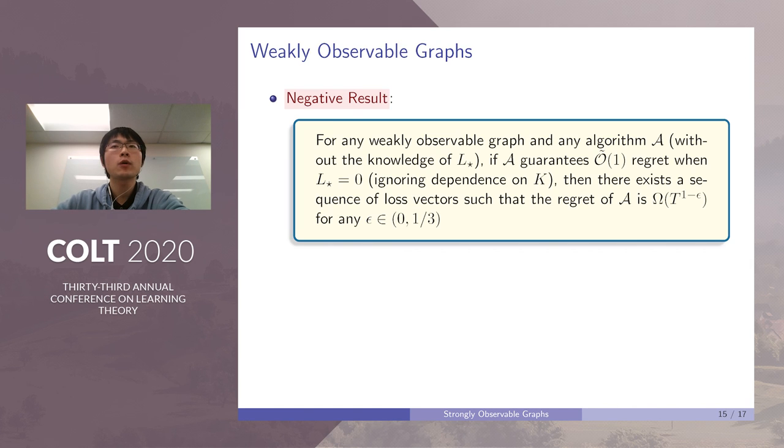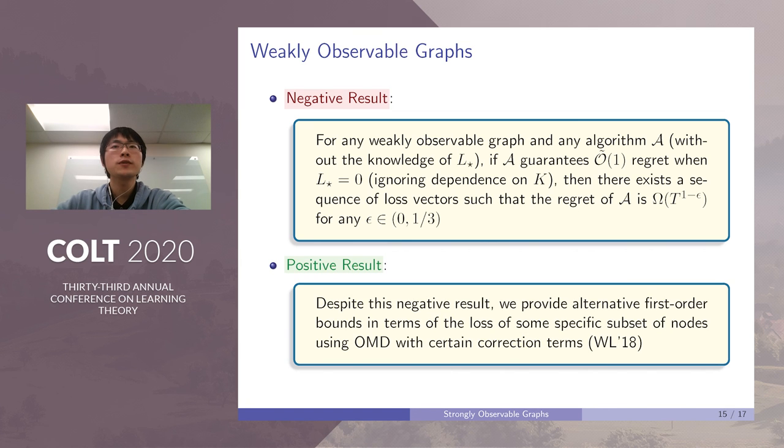For weakly observable graphs, we prove the impossibility of small-loss bounds by constructing two different adversaries, ensuring that no algorithm can achieve small-loss bounds under both adversaries. However, using OMD with certain correction terms, we derive alternative first order bounds in terms of the average loss of nodes in a weakly dominating set, or the loss of the best arm in S. Due to the time limit, I omit the details here.